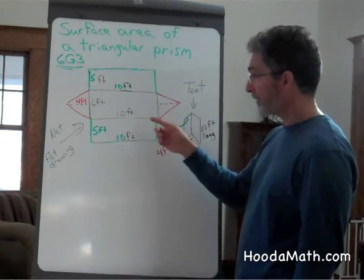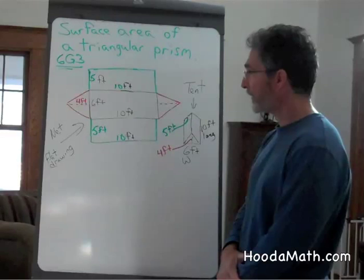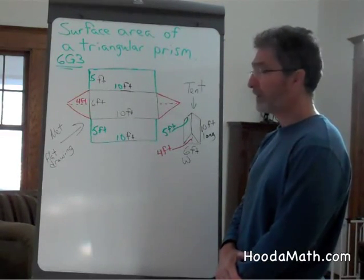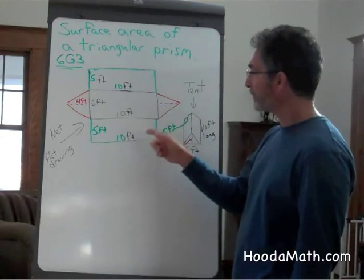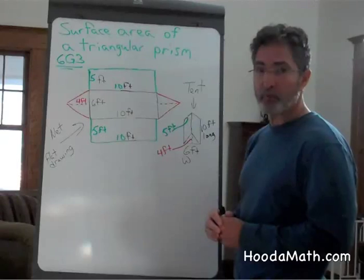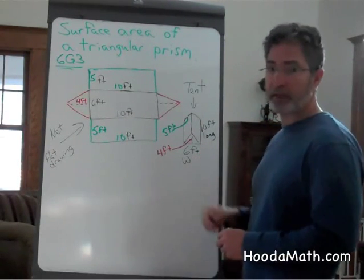There are five faces to this figure. To find the surface area, we have to find the area of all the rectangles and the two triangles. When we sum them, we will find the surface area for this tent.